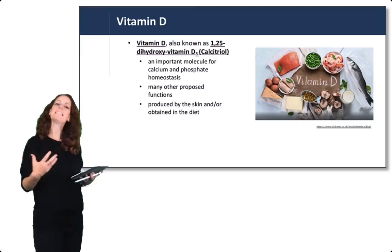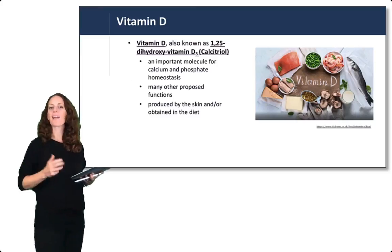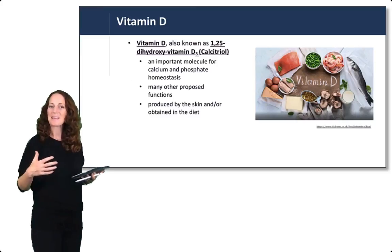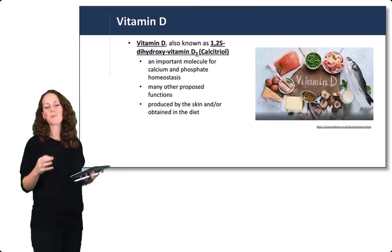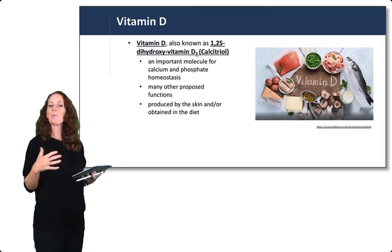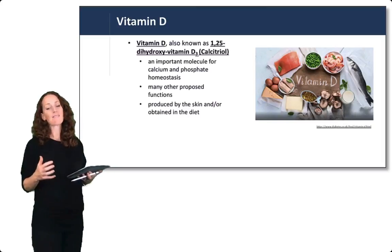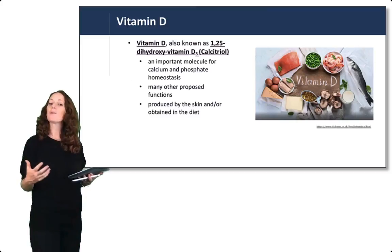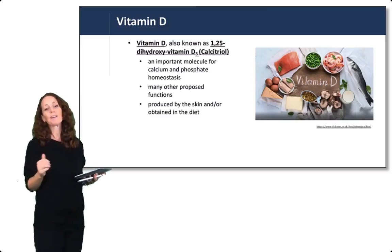Vitamin D is also called calcitriol. Its chemical name is 1,25-dihydroxyvitamin D3. It's an important molecule for calcium and phosphate homeostasis, and it has many other proposed functions which are currently debated.